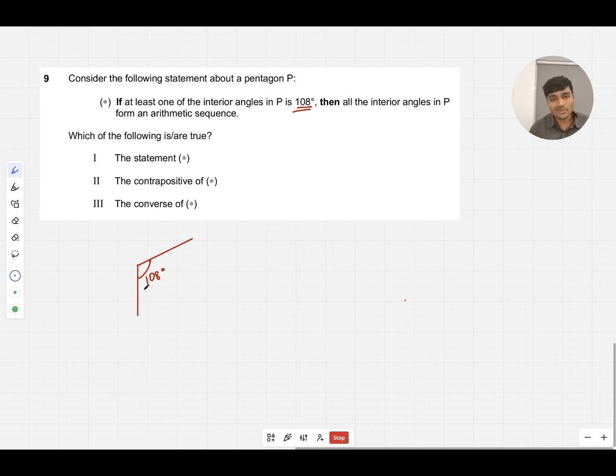If I choose a right angle here, that's one angle, and another angle, these are both 90 degrees. Now it doesn't really matter what the two remaining angles are. There's no way that all five angles can form an arithmetic sequence.